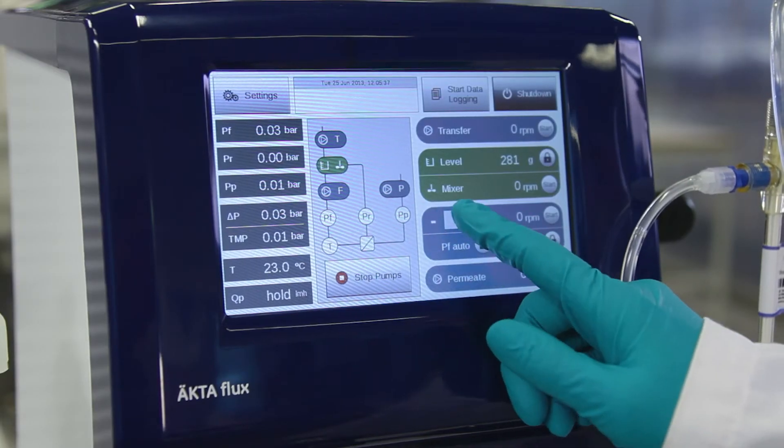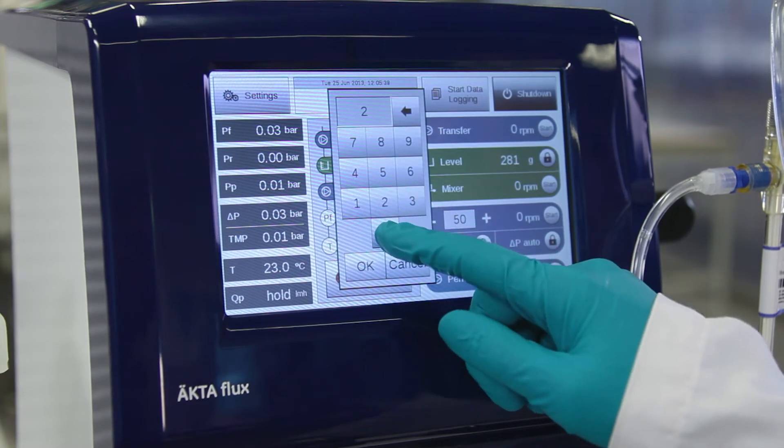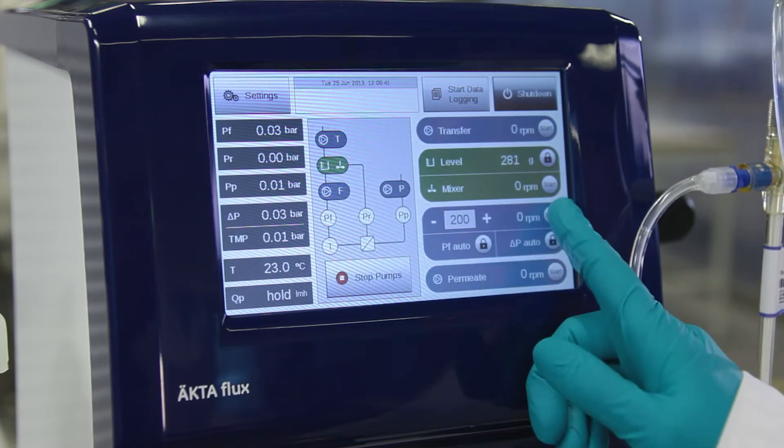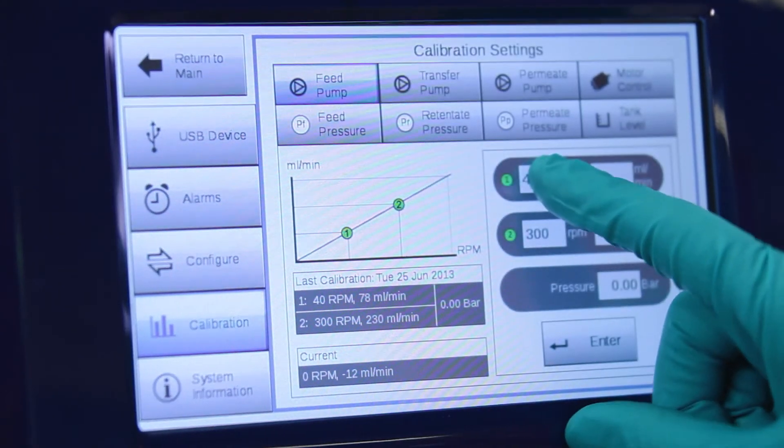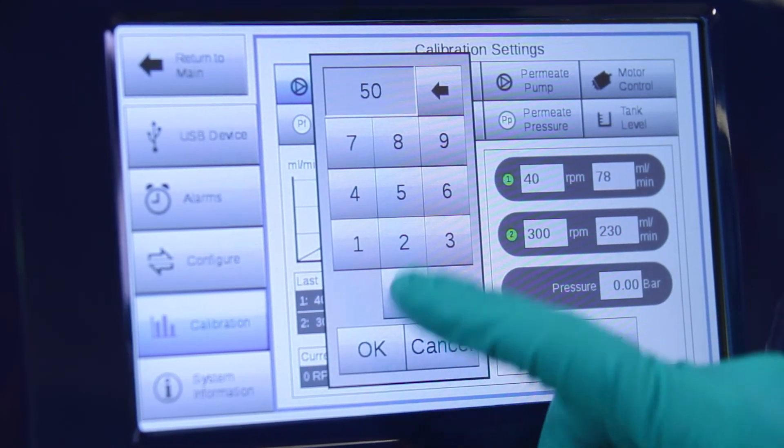Repeat the flow recording but now at a faster pump speed. Press settings and calibration on the touchscreen, then enter the speed in RPM and calculated flow in the calibration view.